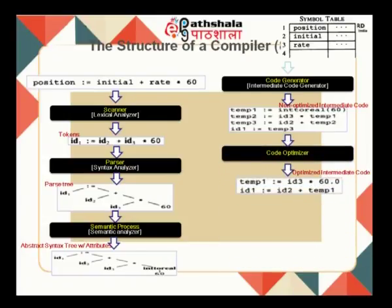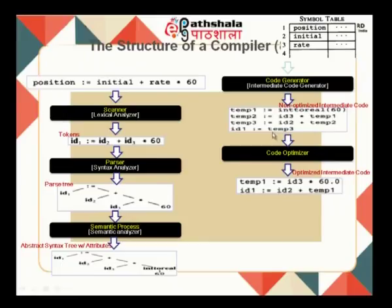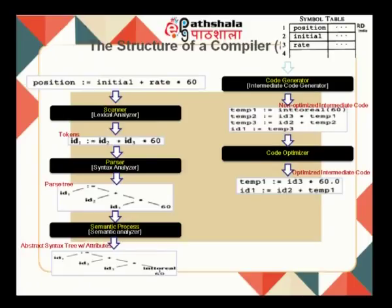The code optimizer then processes this. Since temp1 = intofloat(60) is a constant value, it folds that directly. The last two instructions — temp3 = ID2 + temp2 and ID1 = temp3 — are combined into one: ID1 = ID2 + temp1. This is optimization. There are many optimization techniques available, and we will go through them in subsequent modules.